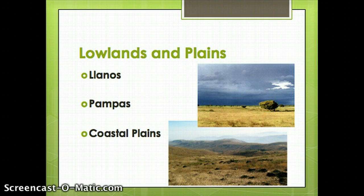Throughout Central and South America we have coastal plains, flat areas sandwiched between mountain ranges or highland areas and the coast. All along the coast, in between the Andes and the Pacific Ocean, are coastal plains. And along the eastern coast of South America, in between places like the Brazilian Highlands and the Atlantic coast, will be coastal plains.